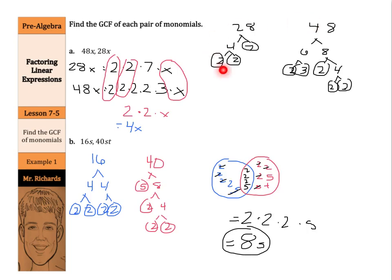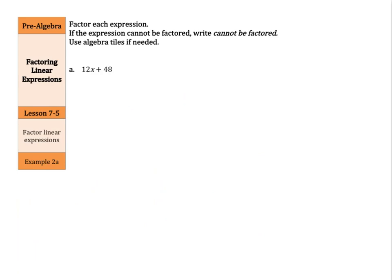Whether you use tree diagrams and list them out and circle the common factors, or you use tree diagrams with the Venn diagram method putting the numbers in common in the middle and simplifying, both methods will help you find the GCF of monomials. Now we come to actually factoring linear expressions. You can use the distributive property and the work-backwards strategy to express an algebraic expression as a product of its factors. An algebraic expression is in factored form when it is expressed as the product of its factors. For something like 12x plus 48, method 2 — using the greatest common factor — will be our best method.